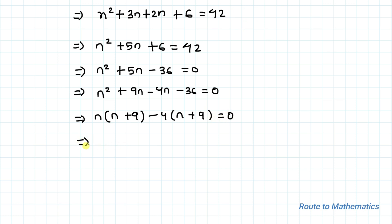This implies (n-4)(n+9) equals 0. This implies n equals 4 or n equals -9 as our answer.